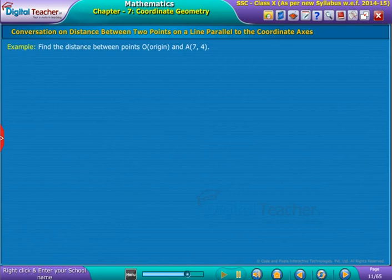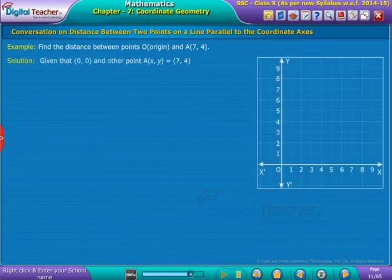find the distance between points O origin and A(7, 4). Solution: Given that one point is at origin and the other point A(x, y) is equal to (7, 4),